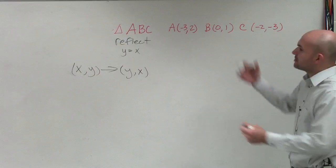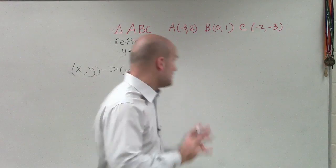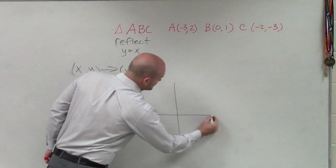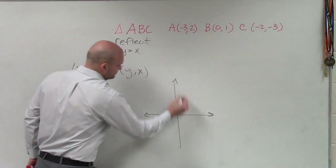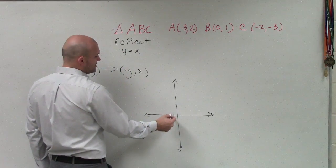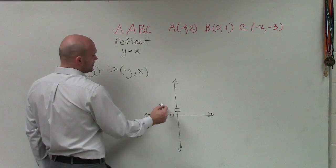So by looking at this problem, ladies and gentlemen, what we're going to do is we want to find our new points. Now, before I go and evaluate the new points, let's just go and graph and take a look at what this image looks like. So I have A, which is at (-3, 2).